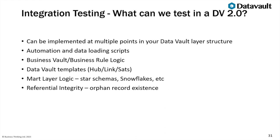Moving on to integration testing — what can we test using integration tests in Data Vault? These can be implemented at multiple points. We're not quite at end-to-end testing yet, but we're beginning to look at units working together. We can look at automation and data loading scripts again, test that underlying functions work together, test the business vault and business rule logic, look at data vault templates, any mart layer logic that builds star schemas or snowflakes, and also referential integrity — orphan record existence.